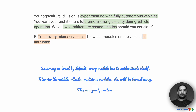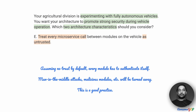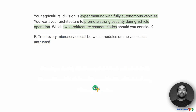Option E suggests treating every microservice call between modules on the vehicle as untrusted. When we assume no trust between every single module, each module must authenticate itself before conducting any operation. This eliminates certain types of attacks — for example, a man-in-the-middle attack, or a phishing attack where a malicious module is inserted in place of a legitimate one. Any request from a malicious module will be turned away because it wouldn't be able to authenticate itself properly. This is a great security practice, so option E is looking good.